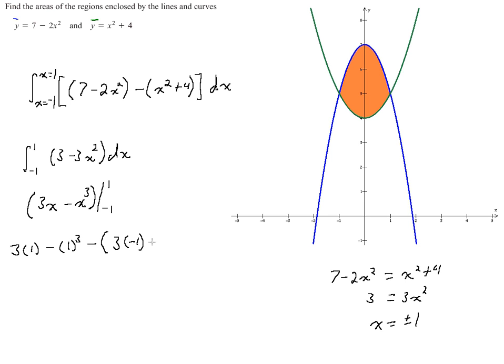So 3 times 1 is 3 minus 1, that's going to be 2 in a second, minus 3 times negative 1 is negative 3, minus negative 1 cubed is negative 1. So I'm just showing all the steps here.